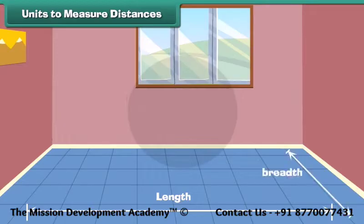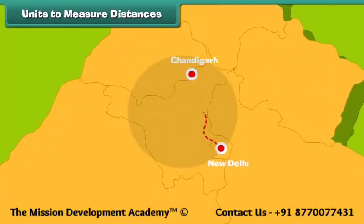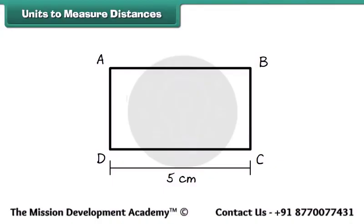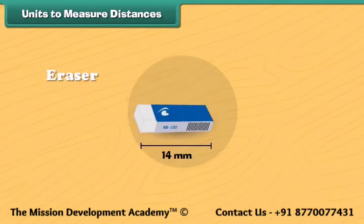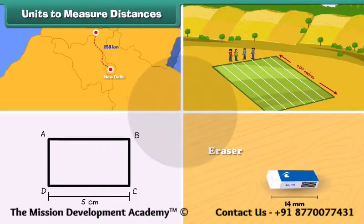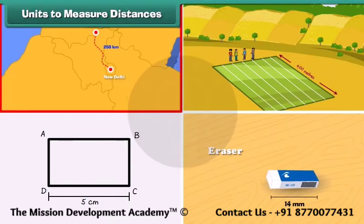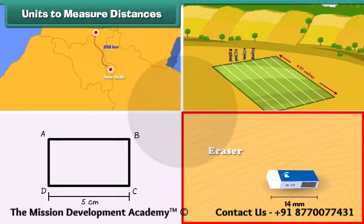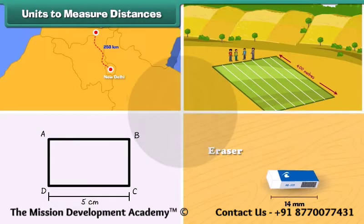Length, breadth and height are words used to express some distance. The distance between New Delhi and Chandigarh is 250 kilometers. Many students participated in a 400 meters race. The length of rectangle ABCD is 5 centimeters. The length of the eraser is 14 millimeters. We find that kilometer, meter, centimeter and millimeter are the units used for measuring distances.